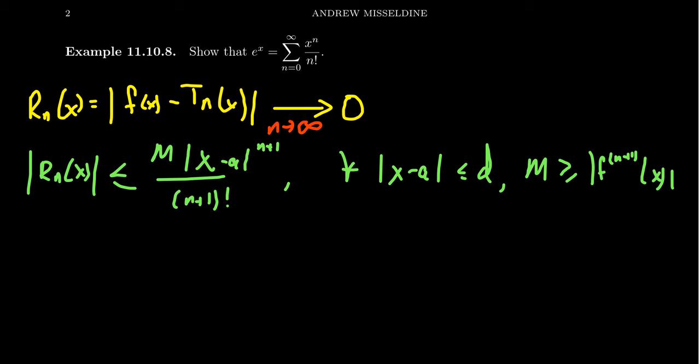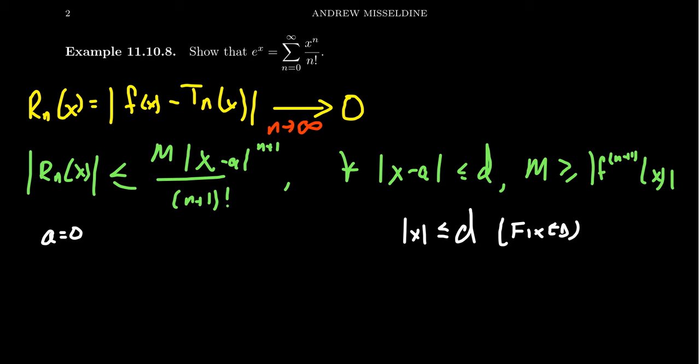Now let's use specifics about our function. Our center is zero because we're looking at a Maclaurin series, so statements like this require x to be less than or equal to some fixed value d. This d is an arbitrary number for now — we will eventually allow d to get bigger and bigger — but for right now we keep d fixed. So we consider x's whose absolute value is less than or equal to d.